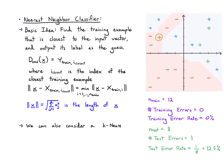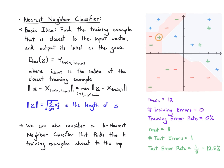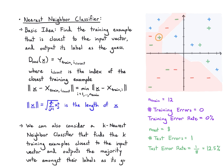We could also consider a k-nearest neighbor classifier that looks at the k closest training examples to the input vector and takes a majority vote among those labels. That's something to consider in a later course.